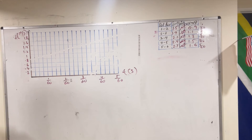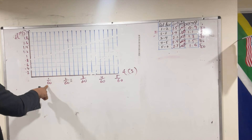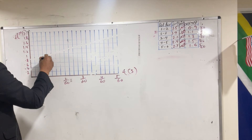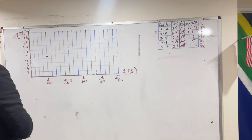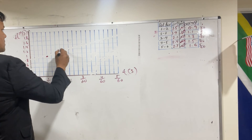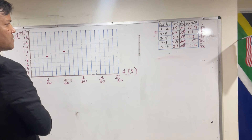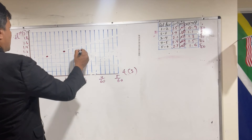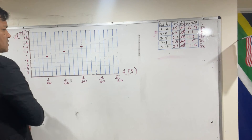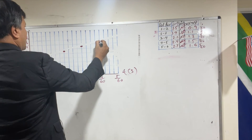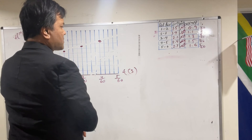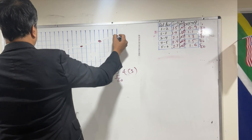Plotting the points: the first point is (1/60, 0.9), the second point is (2/60, 1.1), the third point is (3/60, 1.3), the fourth point is (4/60, 1.5), and the fifth point is (5/60, 1.6).